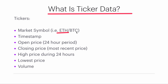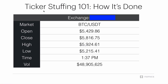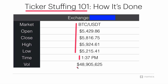A ticker really consists of a market symbol, a timestamp, and then open, close, high, low, and volume for a 24-hour period. Right here in this table, we have a set of data that represents one ticker. As you can see, this ticker contains a trading pair, an open, close, high, and low, a timestamp when the ticker was generated, and a volume.